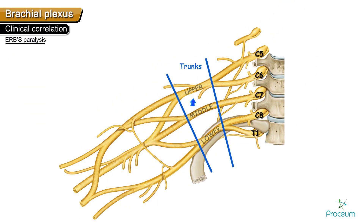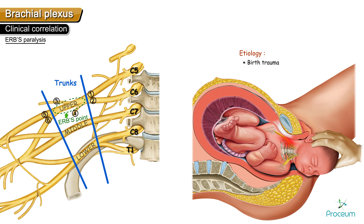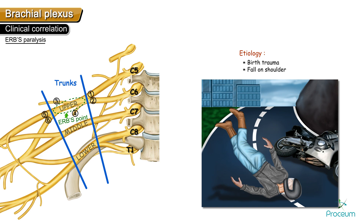Erb's paralysis is damage to the upper trunk of the brachial plexus, formed by C5 and C6 roots. Erb's point is the area on the upper trunk where about six nerves meet, and injury here leads to Erb's paralysis. This usually occurs as birth trauma when there is undue abduction of the head, neck, and shoulder during delivery, causing stretching of the upper trunk. It can also result from a fall on the shoulder in road traffic accidents.